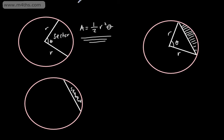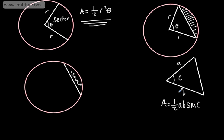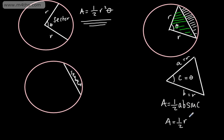Let's just look at the triangle here. We've seen in a previous video that we can find the area of a triangle. So if we have a triangle where we don't have a perpendicular height, with sides c, a, and b, we can say that the area is going to be one-half ab sine c. In this particular case, a is going to be equal to r, b is going to be equal to r, and c is going to be equal to theta.